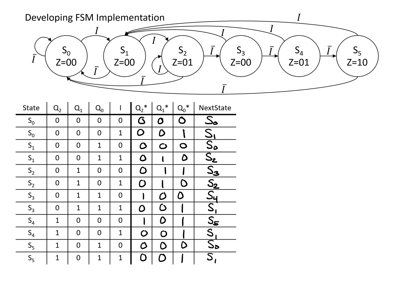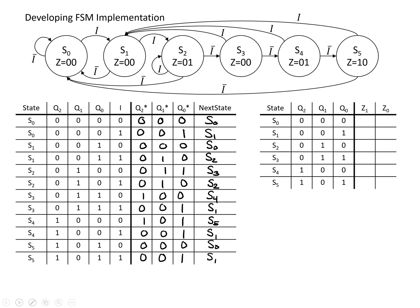That takes care of our next state table. The other thing we need to handle is our output table. This is a Moore machine because the outputs are specified within the state, so they don't depend on the inputs. I've drawn a table with the different states and our two output bits, Z1 and Z0. Z0 is 0 in S0, 0 in S1, 1 in S2, 0 in S3, 1 in S4, and 0 in S5. For Z1, the only case where it's 1 is in S5; in all other cases it's 0.